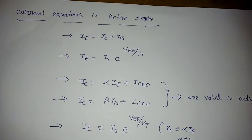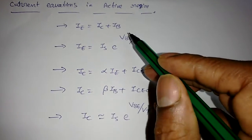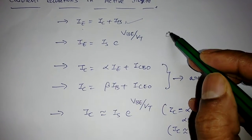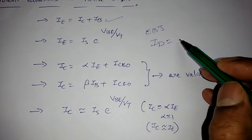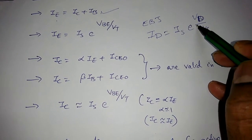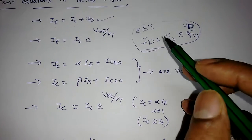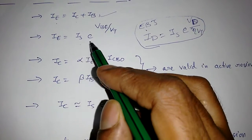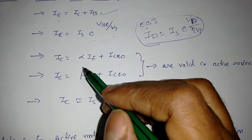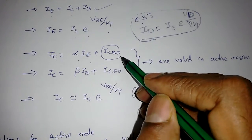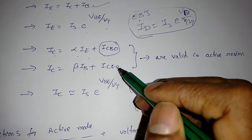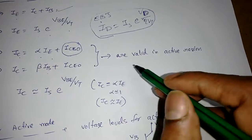Now we look at current equations in the active region. The total emitter current equals collector current plus base current: IE = IC + IB. Since the emitter-base junction is forward biased, from the diode equation IE = IS · e^(VBE/VT), taking eta = 1 for BJT. In the common base configuration, IC = α·IE + IC_BO, and in common emitter configuration IC = β·IB plus minority carrier current.